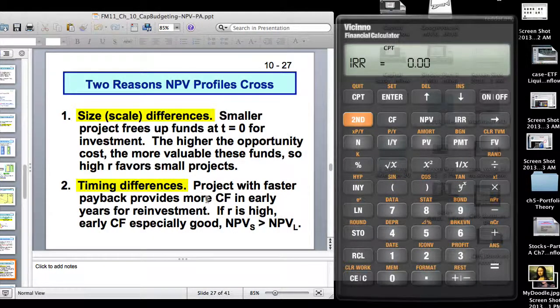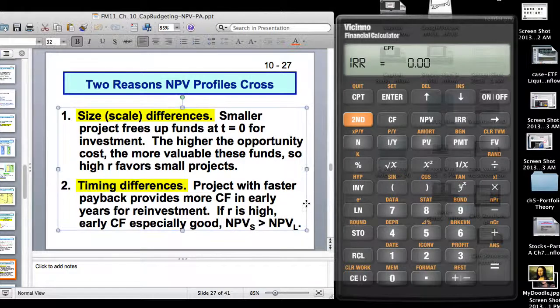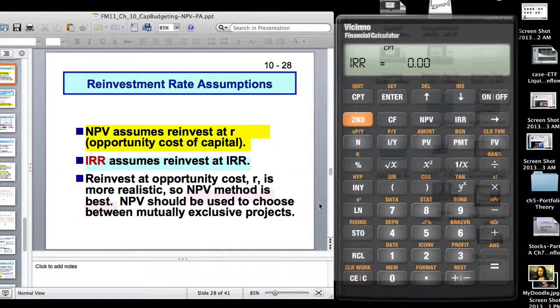Also timing differences. You can have different projects with different payback speeds. If you have a project with a faster payback, it provides more cash flow in the early years for reinvestment. And so if the reinvestment rate or R, the discount rate is high, early cash flow is going to be desirable. So in this particular case, NPVS gets greater than NPVL. Here is the reinvestment rate assumption. NPV assumes that you reinvest at R, which is the opportunity cost of capital. IRR assumes that you reinvest at the internal rate of return.